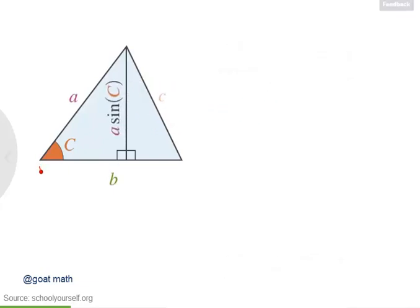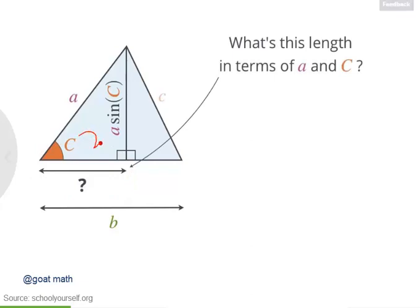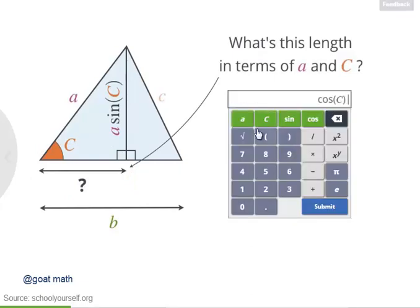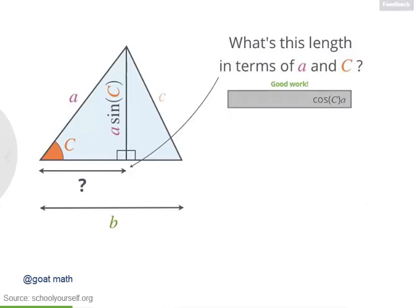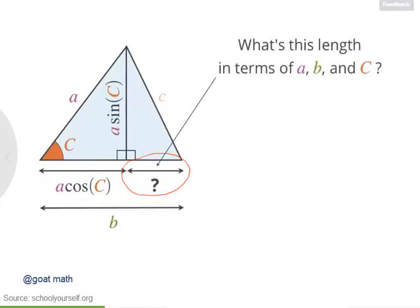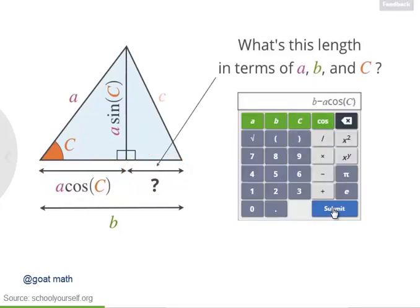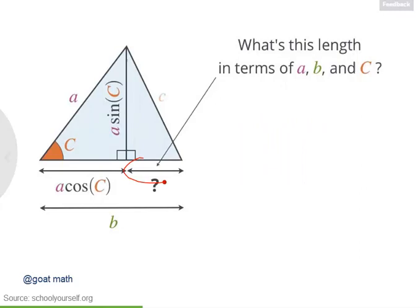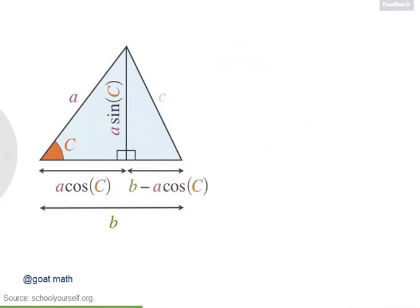Now we said the length of this bottom side is b, but let's look at the part of it to the left of the altitude. What's the length of this leg of the right triangle adjacent to angle c? Exactly. The length of this side is a times the cosine of c. So if this entire bottom side has length b, and the part to the left of the altitude has length a times the cosine of c, then how long is the remaining portion to the right of the altitude? Nicely done. This side has length b minus a times the cosine of c.